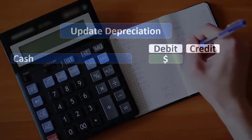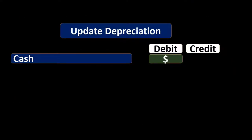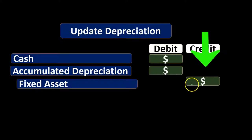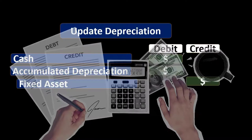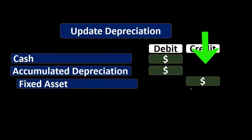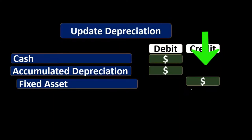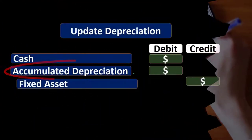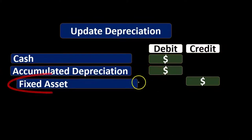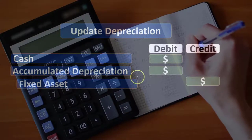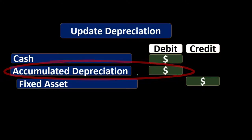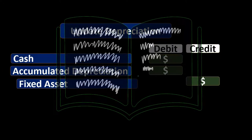Next, we need to take the equipment off the books along with the accumulated depreciation. To do that, we are going to credit the equipment. It's an asset with a debit balance, so we credit it to remove it. The accumulated depreciation is a contra asset account related to the fixed asset we're taking off the books, so it can't be left on the books either. We need to debit the accumulated depreciation — it has a credit balance, so we do the opposite and debit it to remove it.